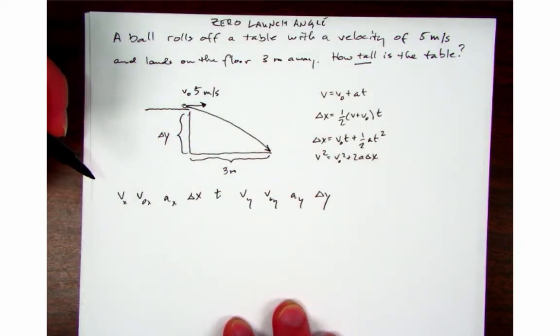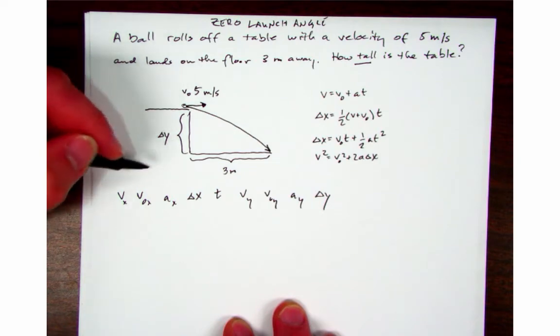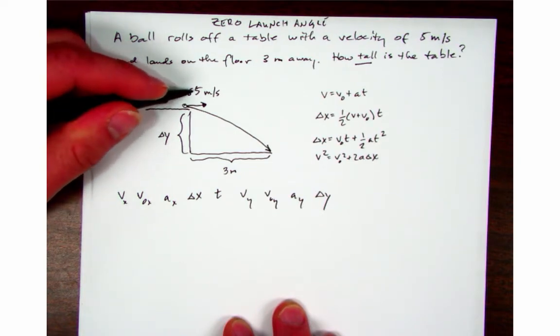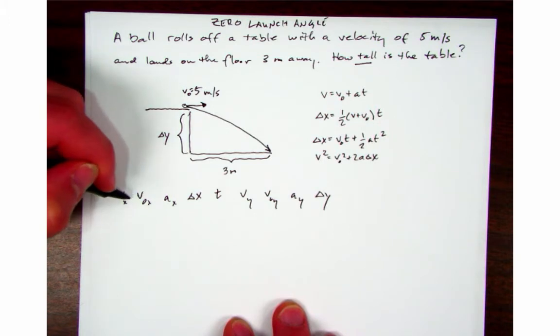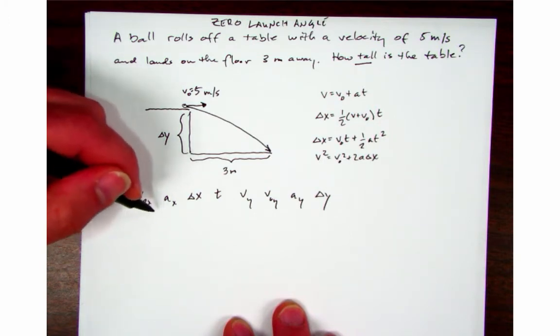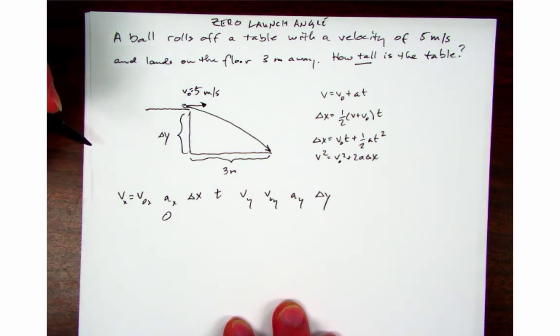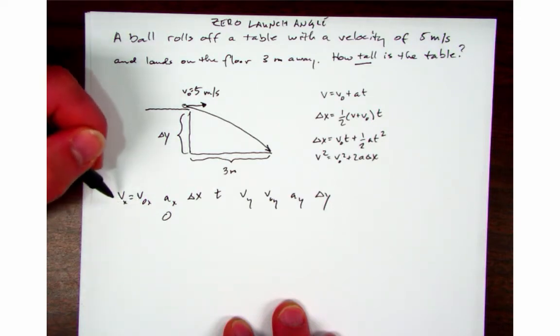So I'm going to start filling in this chart. It starts out with this initial velocity of five meters per second. Now all of that velocity is in the x direction. There is no y velocity. So I know two things. I know that a_x is zero, and that is the acceleration in the x direction. Nothing's pushing that ball forward as it falls through that path.